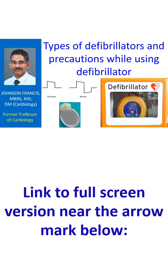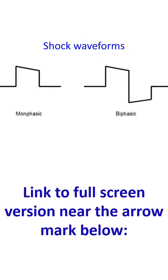A defibrillator is a device used to deliver high voltage direct current shock to the chest through a pair of electrode patches or paddles to restart the heart which has suffered a cardiac arrest. Usually the voltage is about 2000 volts. A high voltage capacitor is used in the device to store the energy at high voltage just before delivery. Though the voltage is very high, it is delivered only for a fraction of a second and in a specially controlled manner.